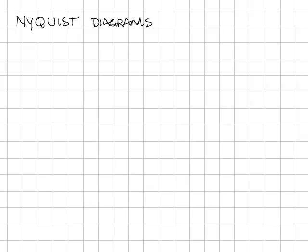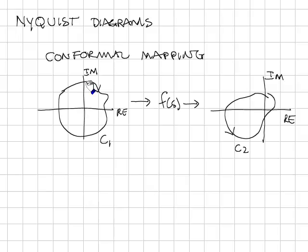Another method for determining stability of closed-loop systems is to use Nyquist diagrams. Nyquist diagrams are based on conformal mapping. In conformal mapping, you map one curve through a function to another curve.